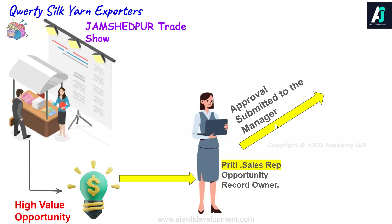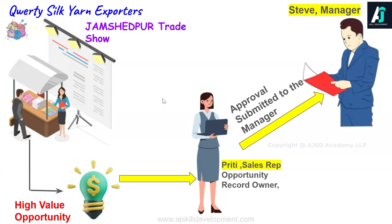Her senior manager is Steve — he is the manager for Prithi. If she has to close this particular opportunity, she has to get an approval from her manager, and only then will she be able to close it. So there was a trade show at Jamshedpur by QRT Silky and Exporters, they acquired a very high-value opportunity, and Prithi is the sales rep who wants to close it to Closed Won but cannot do so without her manager's approval.